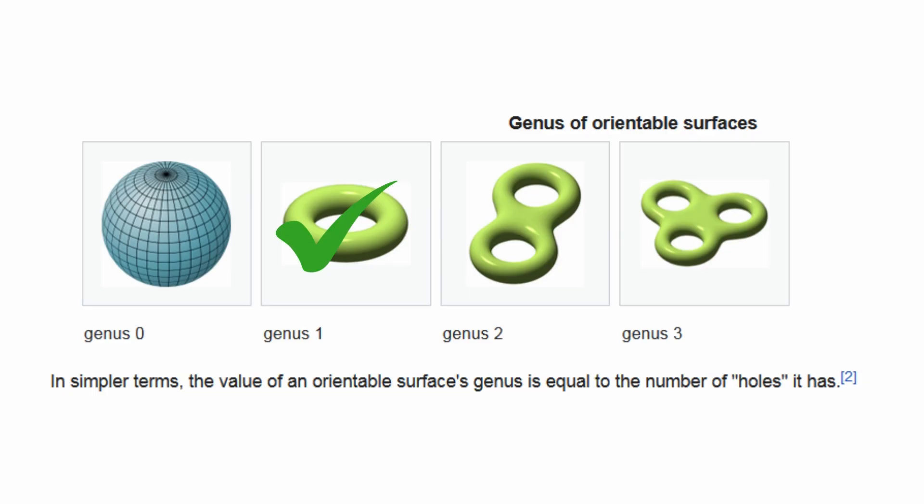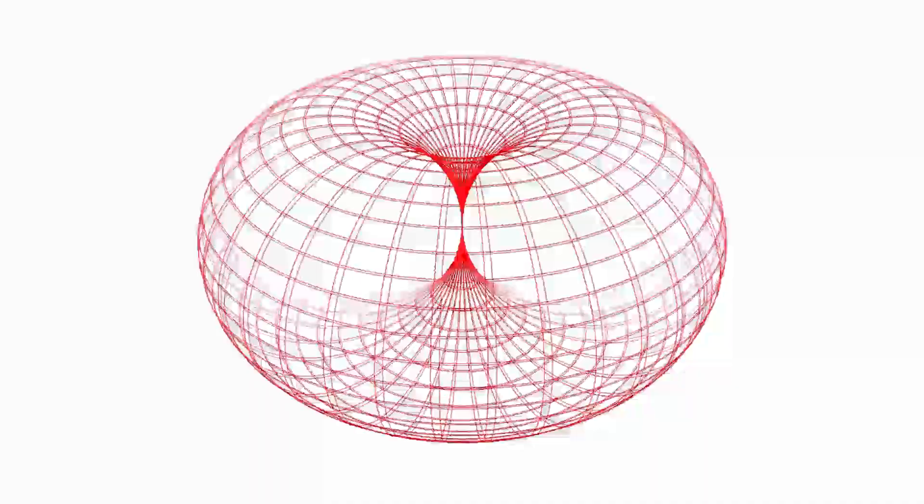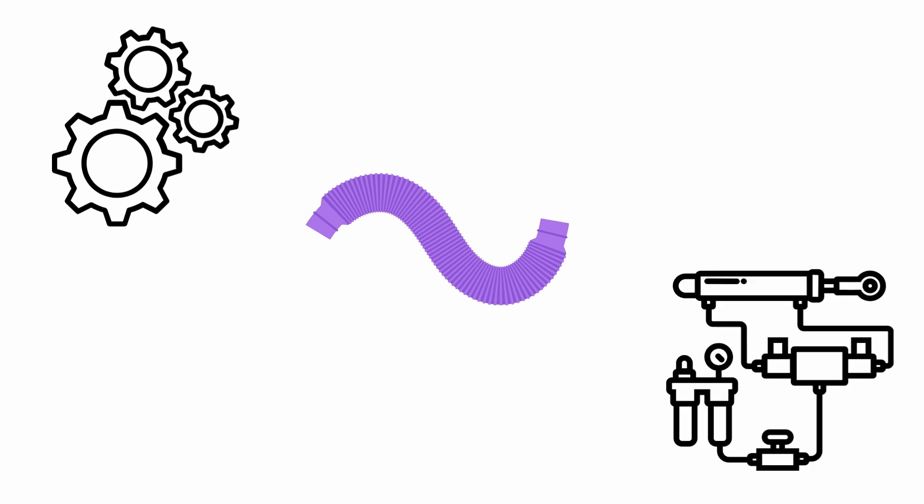In topology, the torus has genus 1, meaning a single perforation, unlike the sphere which has genus 0. This property allows for the modeling of cyclic and continuous structures without edges, useful in closed systems such as gears, tubes, and pneumatic components.